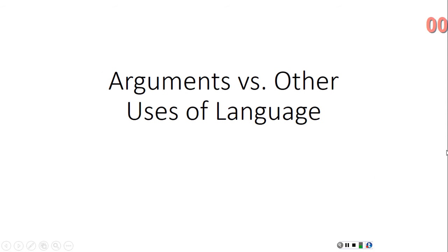Hello. Today we'll talk about arguments versus other uses of language. We're going to need to be able to distinguish arguments from other uses of language so that when we're reading a passage we can tell what's the point of the passage. Is the author trying to give an argument? Is the author merely trying to report some information? It's a really useful skill to have and something that we should learn if we're going to learn about arguments.